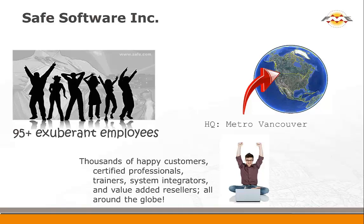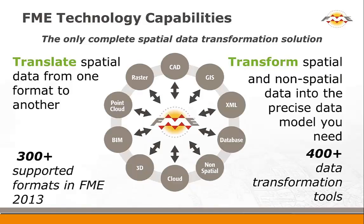Do ask questions as we go — we can certainly try to answer them. We're located just south of Vancouver, British Columbia in a suburb called Surrey, about 40 minutes south. We're around 95 exuberant employees — there's probably one or two not so exuberant at times — and we've been around for almost 20 years now. This is a quick overview of the FME capabilities that we have.